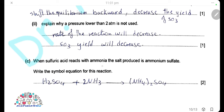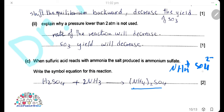When sulfuric acid reacts with ammonia, the salt produced is ammonium sulfate. The equation is: H₂SO₄ + 2NH₃ → (NH₄)₂SO₄. Correct formula of ammonium sulfate and a correctly balanced equation are required for the two marks.